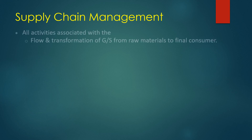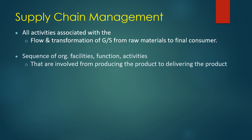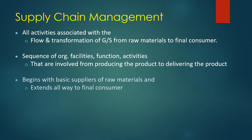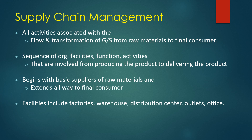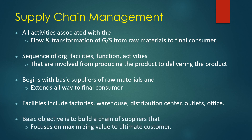Supply chain management encompasses all activities associated with the flow and transformation of goods and services from raw materials to final consumers. It is the sequence of organizational facilities, functions, and activities involved from producing to delivering the product. It begins with basic suppliers of raw materials and extends all the way to the final consumer. Facilities include factories, warehouses, distribution centers, outlets, and offices. The basic objective is to build a chain of suppliers that focuses on maximizing value up to the ultimate customer.